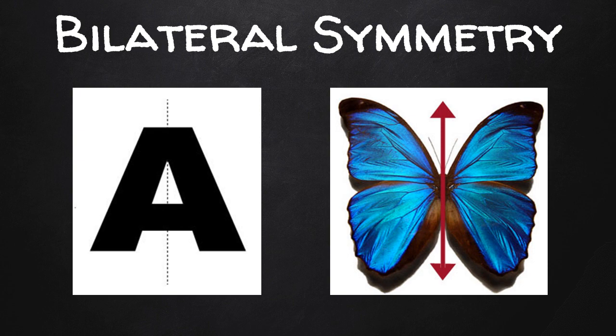Animals with bilateral symmetry have a top and a bottom, a front and a back, and a left and a right. Having this type of symmetry means that you can cut an organism in half in one direction and get two equal halves. Organisms with bilateral symmetry have a head. An example is a butterfly.